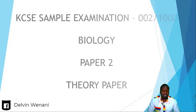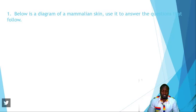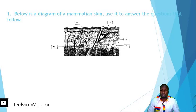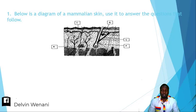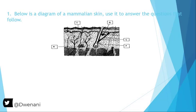The first question says: below is a diagram of mammalian skin, use it to answer the questions that follow. That is the mammalian skin, and it has those parts: R, T, Q, V, and P. Those are the parts we are going to use to answer the questions that follow.